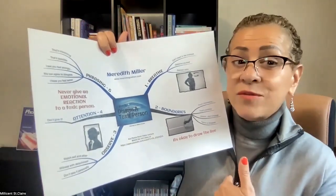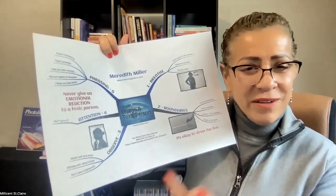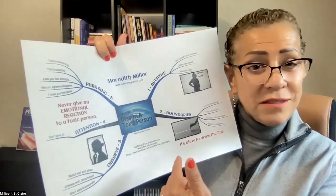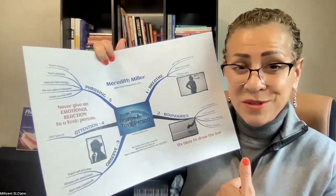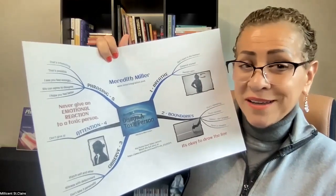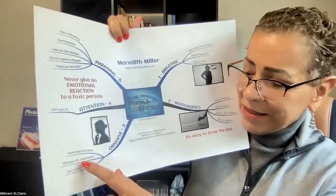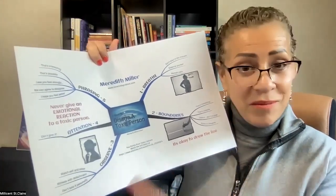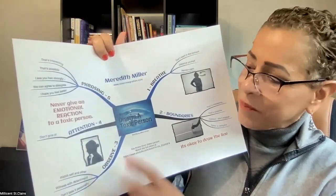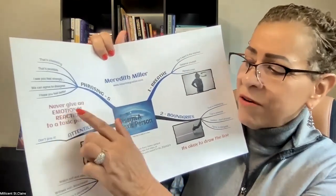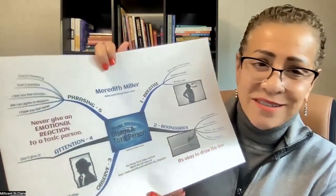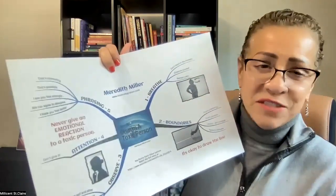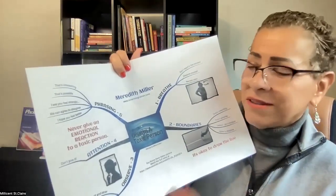Number three: observe — watch yourself and the other. It starts with self, because we have to observe ourselves: why am I getting triggered every time this person says something? Don't engage, just observe. Most important: observe yourself, because you can't control anybody else. Witness with detachment, observe without judgment — we talked about becoming the internal witness. Number four: attention — don't give an emotional reaction to a toxic person. It's just not worth it.